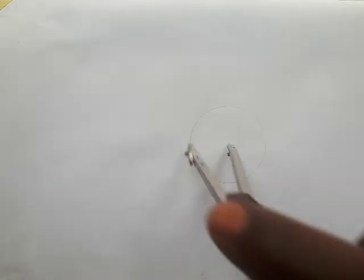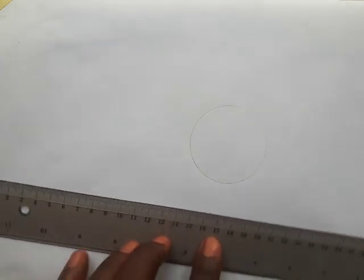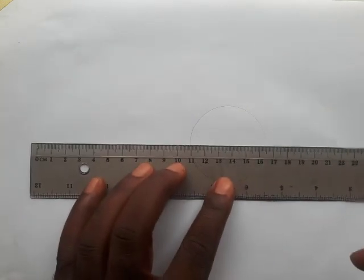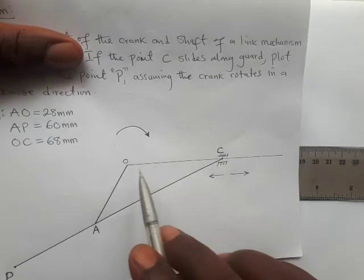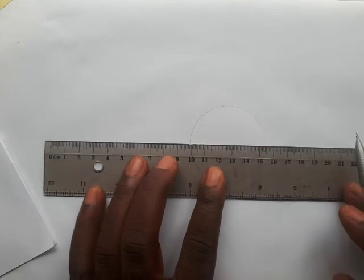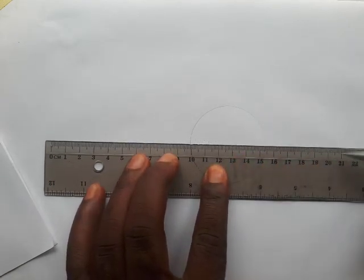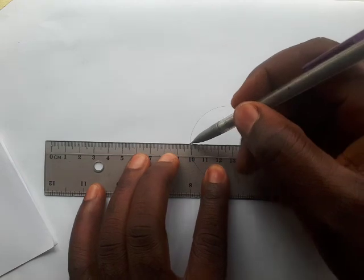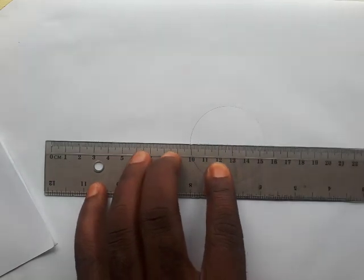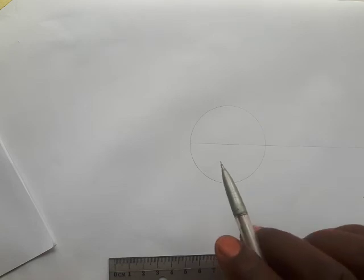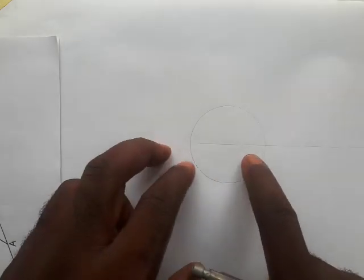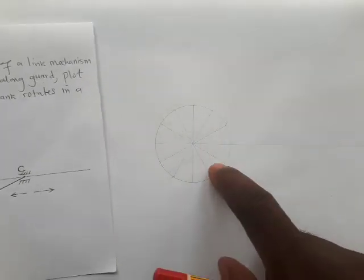The next thing is to divide the circle into 12 equal parts. Do not forget there is a path where point C will be sliding, so while drawing the diameter of the circle, extend the line out. Then divide the circle into 12 equal parts. If you don't know how to do that, check other videos where I explain this. There it is — divided into 12 equal parts.